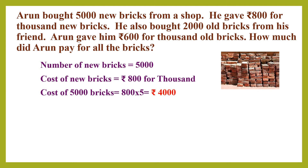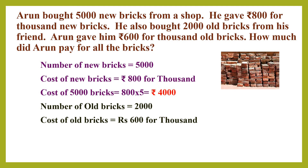Now the next series of steps. Number of old bricks — read the question: he also bought 2000 old bricks, so number of old bricks is equal to 2000. Cost of old bricks is equal to 600 rupees for 1000 — that is given in the question. Now we have to find the cost of 2000 old bricks. For 1000 bricks it is 600 rupees, so for 2000 bricks it is 2 times 600, that is 1200 rupees.